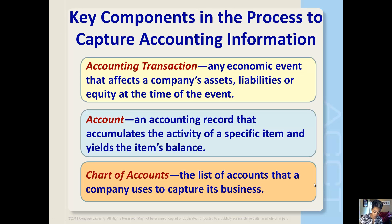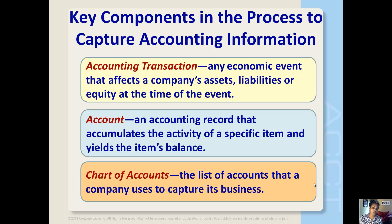All accounting systems are built to capture and report the effects of a company's accounting transactions. There are several key components in the process to capture accounting information. The first is the accounting transaction — the economic events that affect a company's assets, liabilities, or equity at the time of the event. Second, we have the account, which is an accounting record that accumulates the activity of a specific item and yields that item's balance. Third is the chart of accounts — the list of accounts that a company uses to capture its business.